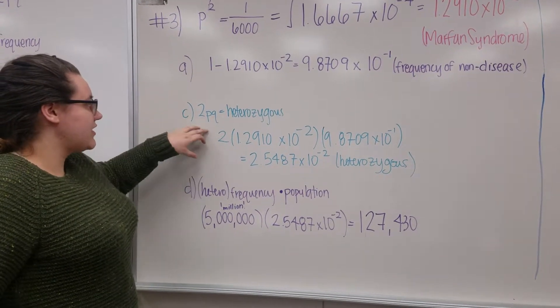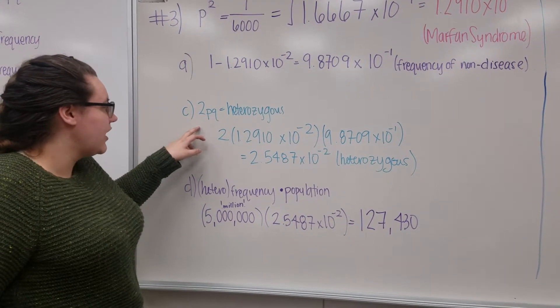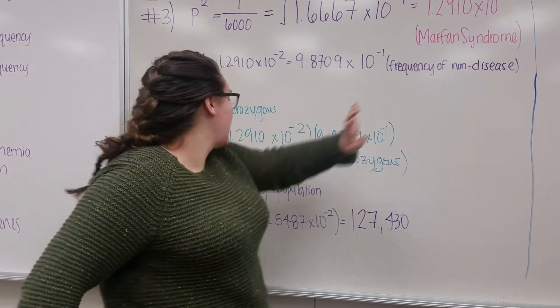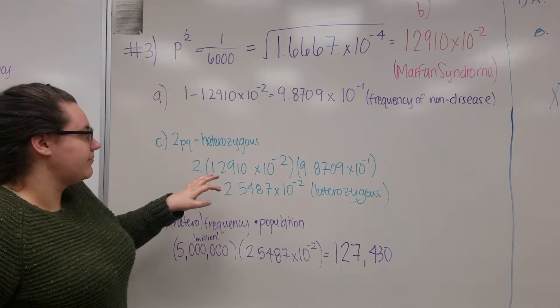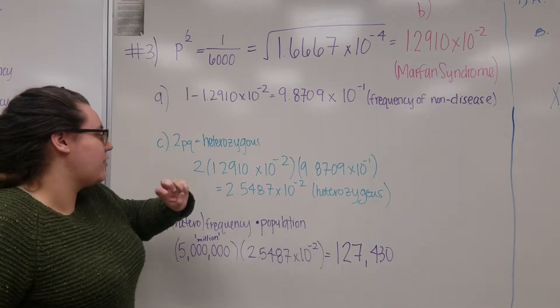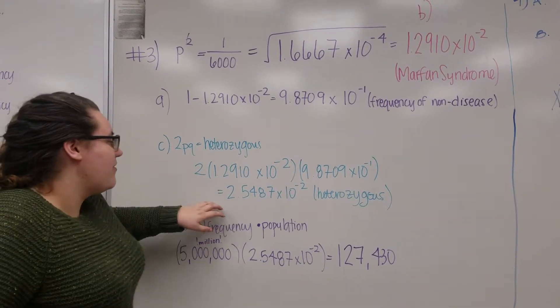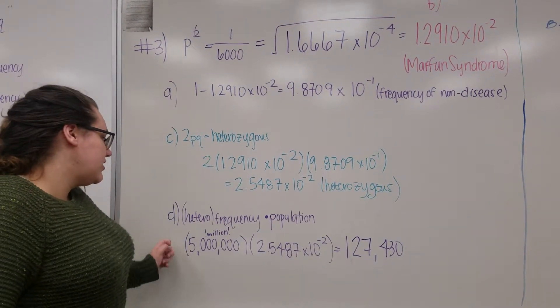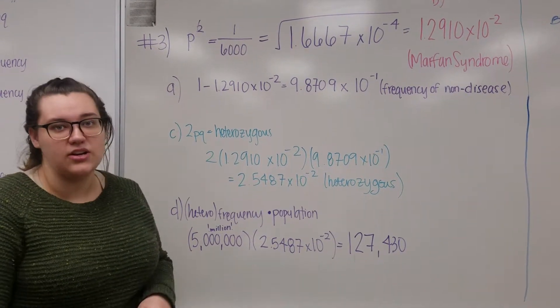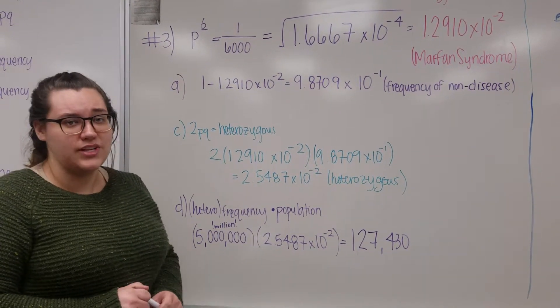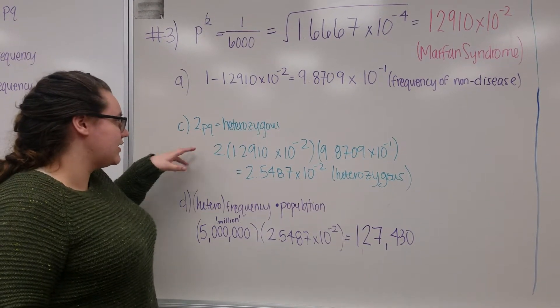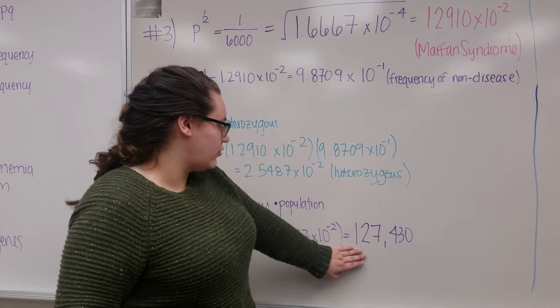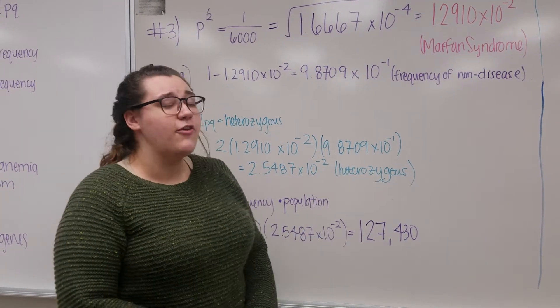C was asking for the heterozygous, which, again, we know is the 2PQ. So 2 times your PQ. That's your Q. I'm sorry. So 2 times PQ. That's just in there. And that's going to equal to 2.5487 times 10 to the negative 2nd. D was asking for the frequency of a population where you have 5 million individuals in it. So you just take this frequency for the heterozygous, which we already found in C. Then you multiply it by the 5 million. And that comes to 127,430 individuals.